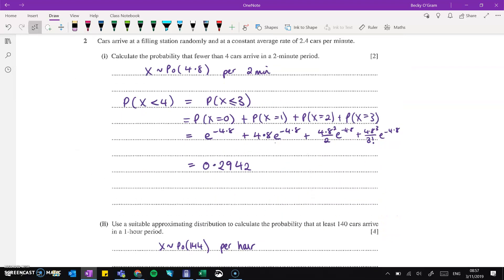Then on question two, we have a Poisson distribution. We have 2.4 cars per minute, which makes 4.8 in 2 minutes. And then we want the probability of less than 4, which is less than or equal to 3. So we do 0, 1, 2, and 3, and add them up using our Poisson formula.